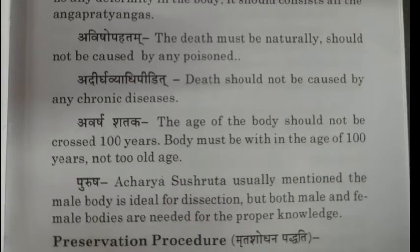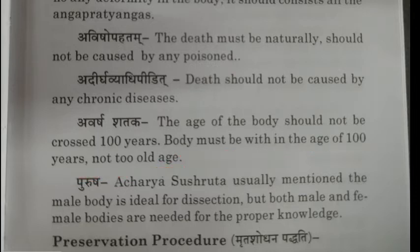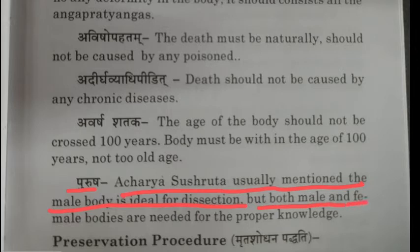Next, Avarsha Sati means the age of the body should not exceed 100 years — the body must be within the age of 100 years, not too old. Acharya Sushruta usually mentioned that the male body is ideal for dissection, but both male and female bodies are needed for proper knowledge.